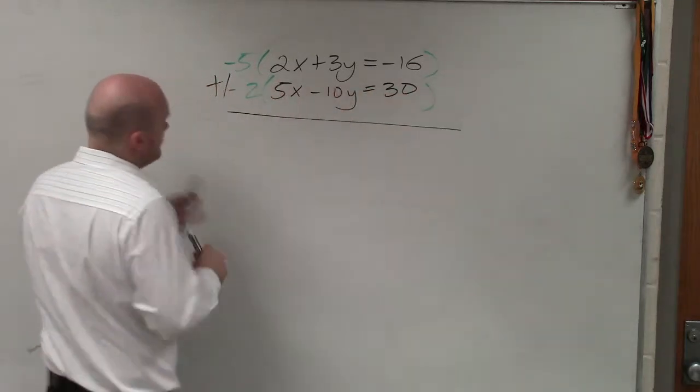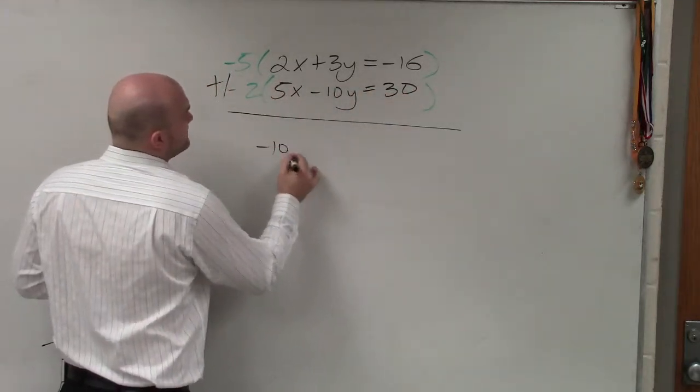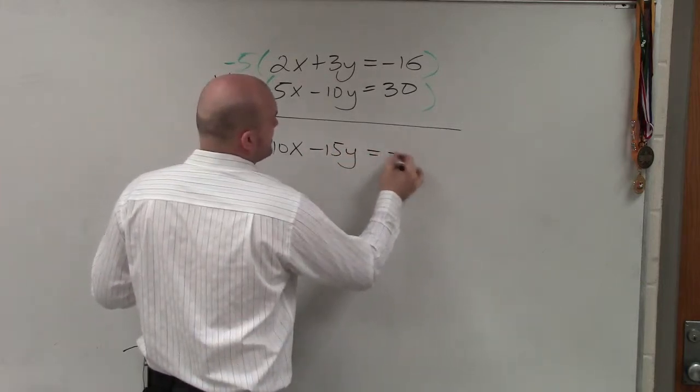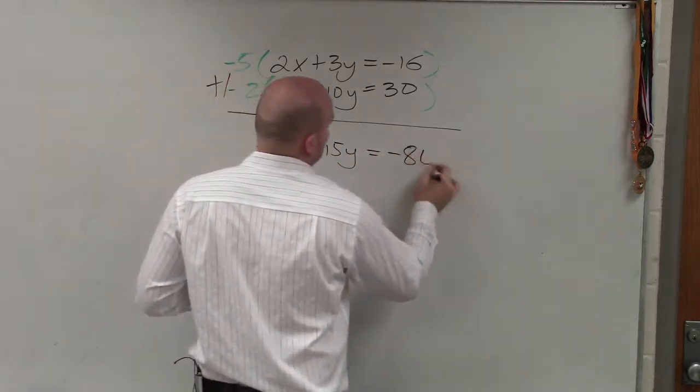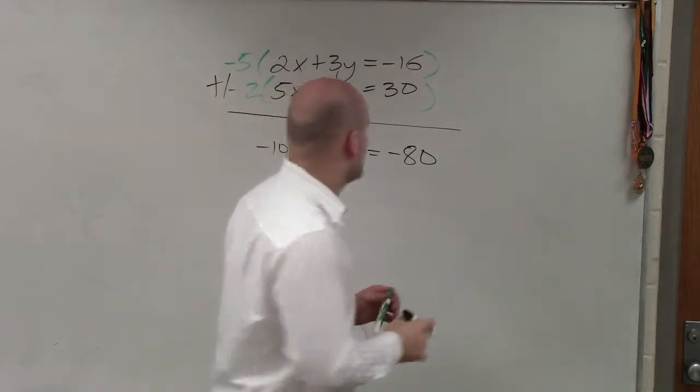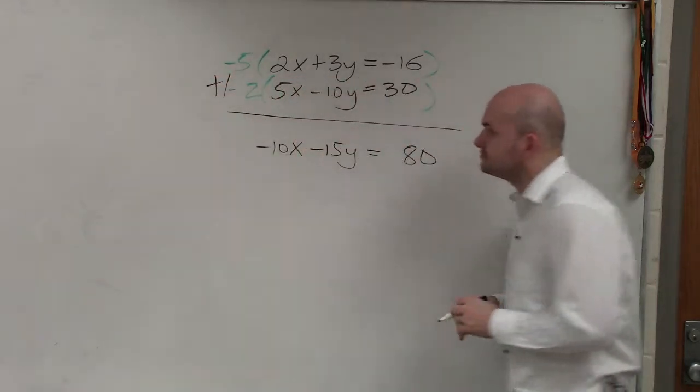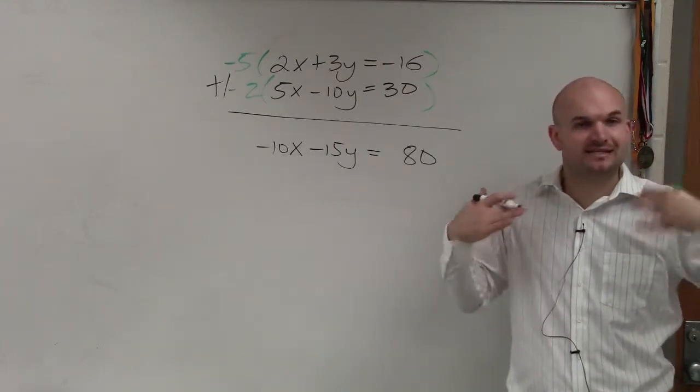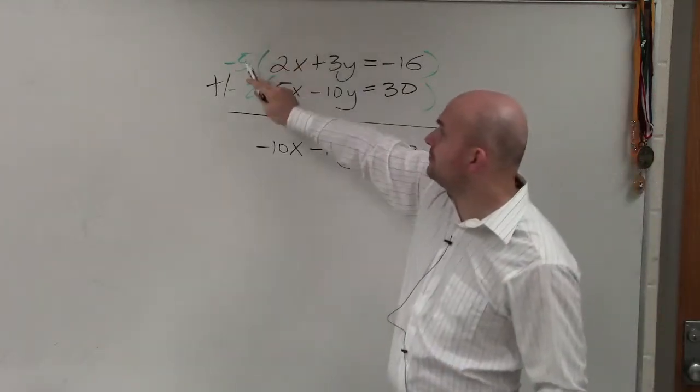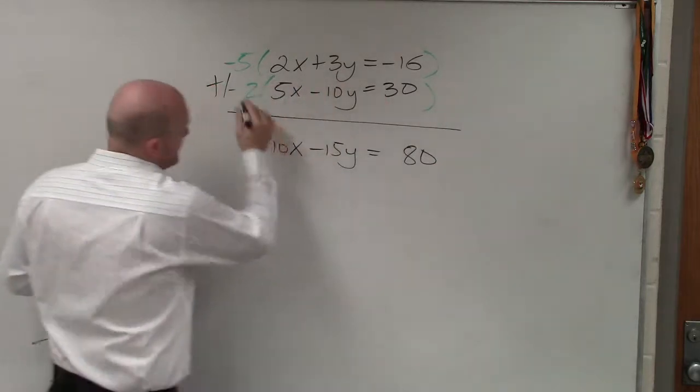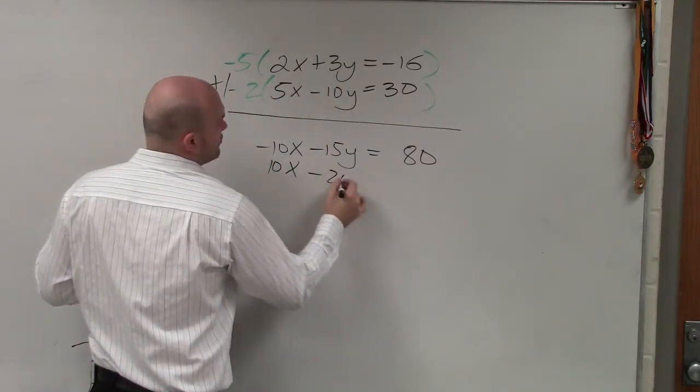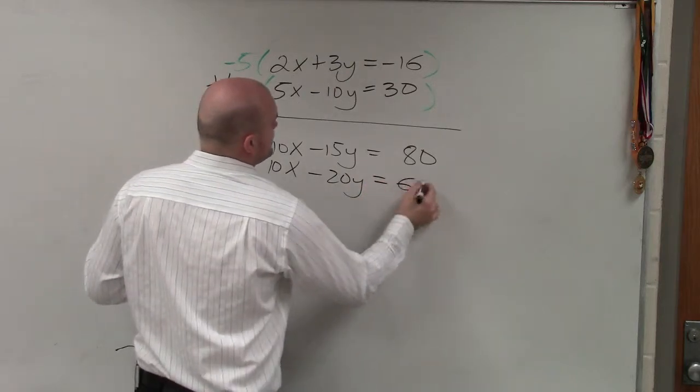I get negative 10x minus 15y equals negative 80. Oh, I'm sorry, positive 80. You don't have to make it negative. I am deciding to make it negative because now, watch, now when I multiply this one, this becomes 10x minus 20y equals 60.